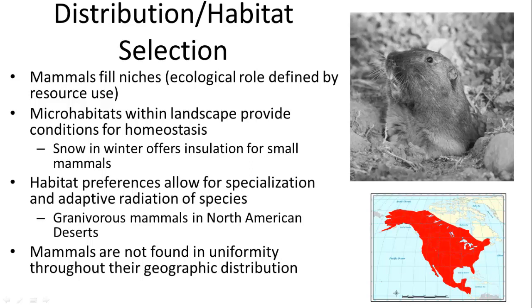Mammals use microhabitats to monitor their temperature, which affects their physiology and ability to maintain homeostasis. For example, in fall and winter small mammals exposed to the cold generally have a hard time maintaining homeostasis until they get snow cover. That snow cover actually acts as insulation, allowing these small mammals to move around and also stay hidden from predators. The microhabitat and the changes in its dynamics also affect what resources they can use and what resources are available.